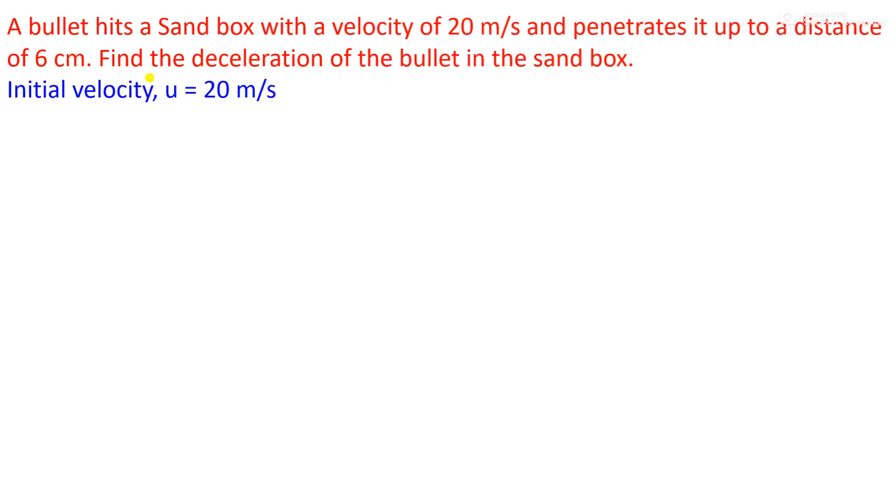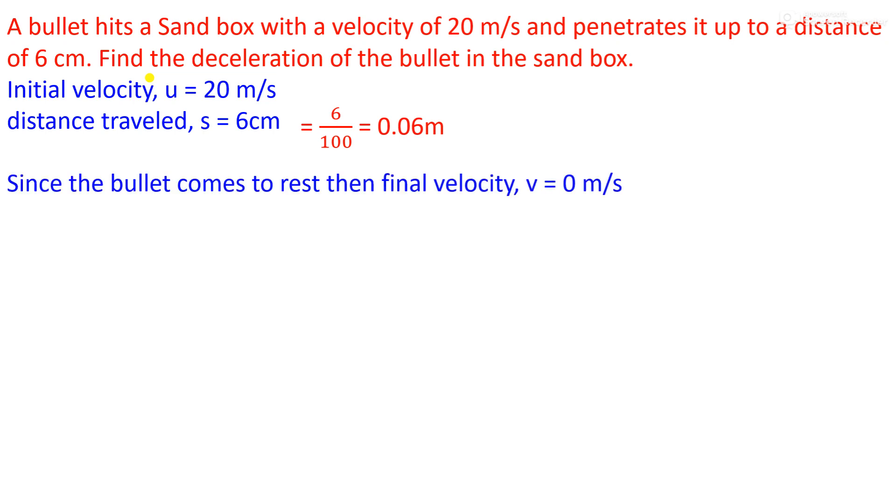So here, initial velocity u is 20 meter per second. The distance covered s is 6 centimeters. We have to convert this 6 centimeters to meters, so it will be 0.06 meter. Since the bullet comes to rest, the final velocity v is equal to 0 meter per second.